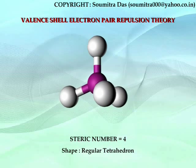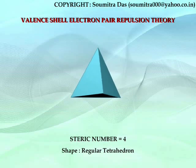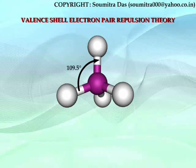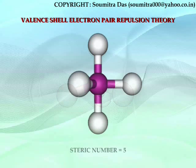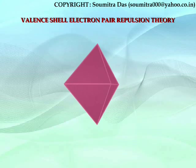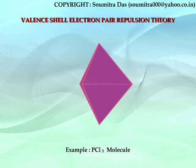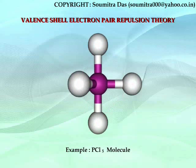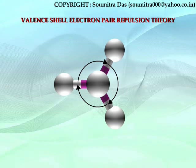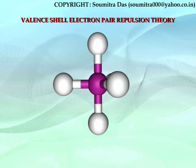When steric number is 4, the electron pairs occupy the vertices of a regular tetrahedron. The molecule is tetrahedral in shape and the bond angle is 109.5 degrees. When steric number is 5, the shape becomes trigonal bipyramidal. There are 2 axial bonds and 3 equatorial bonds. The bond angle between the equatorial bonds is 120 degrees, and the bond angle between the axial and equatorial bonds is 90 degrees.